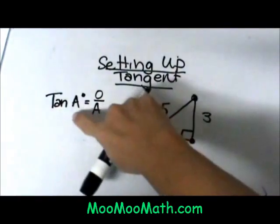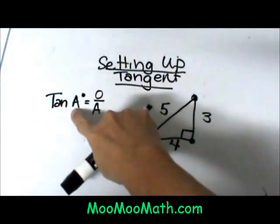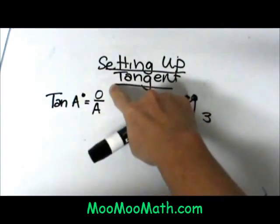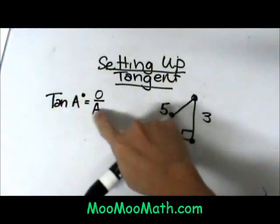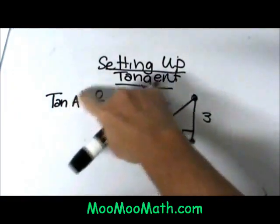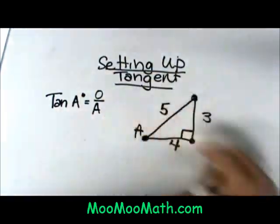A tangent of an angle is the ratio opposite over adjacent. You might know the SOHCAHTOA and this is the TOA tangent ratio.